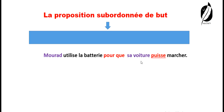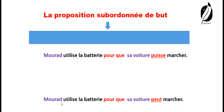Morad utilise la batterie pour que sa voiture puisse marcher. On va comparer cette phrase avec : « Morad utilise la batterie pour que sa voiture peut marcher. » Quelle est la différence ? C'est au niveau de la conjugaison du verbe — le verbe pouvoir. Ici, il est au subjonctif. Là, c'est le présent de l'indicatif. Mais cette phrase, est-elle correcte ou fausse ?